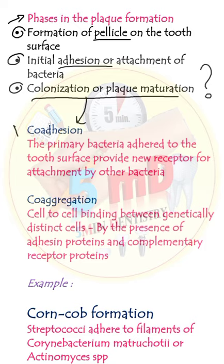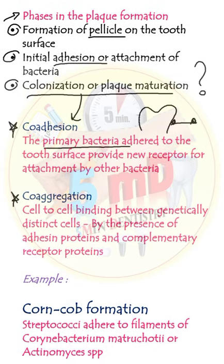The third step can either occur by co-adhesion or co-aggregation. In co-adhesion, the primary bacteria attached to the tooth surface provide receptors for the next level of bacteria. Whereas co-aggregation is the process of cell-to-cell binding between two different cells by the presence of adhesion proteins on one cell and complementary receptor proteins on the other cell.